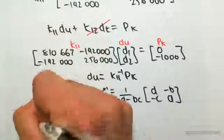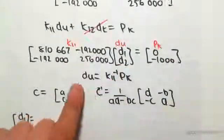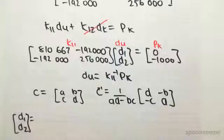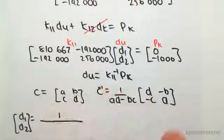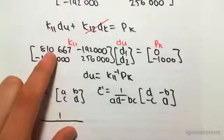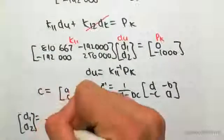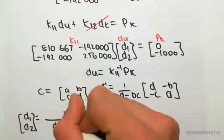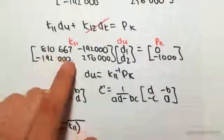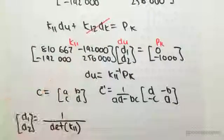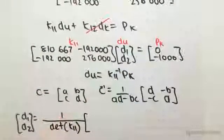d1, d2 equaling, so now I'm writing out the k11 inverse matrix. It will be one on the determinant, which is one on the determinant of k11. I'm just gonna call determinant 'a' just to save a bit of space, so determinant of k11.